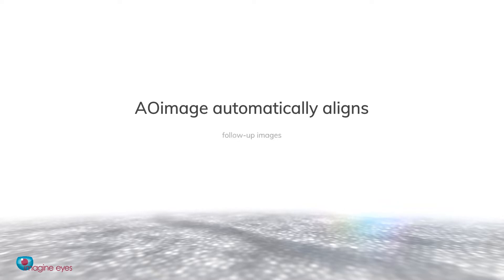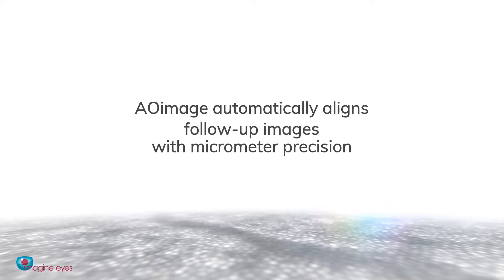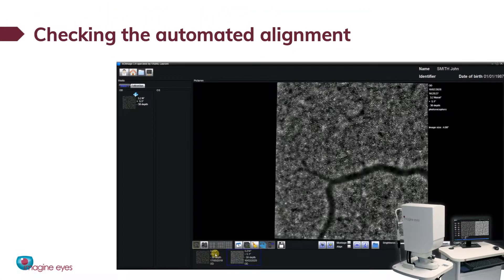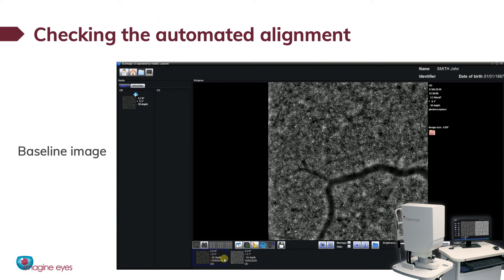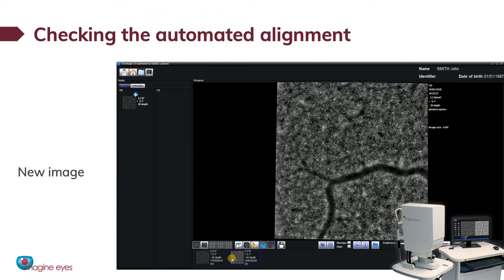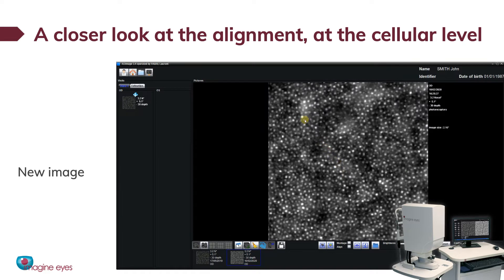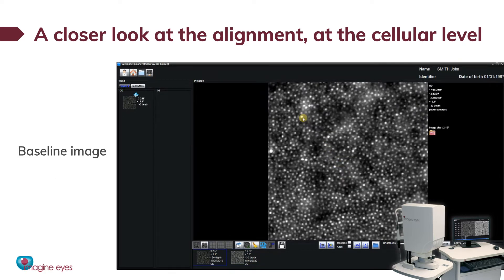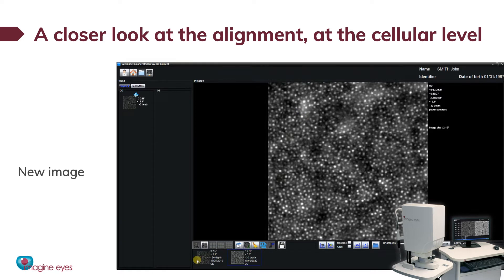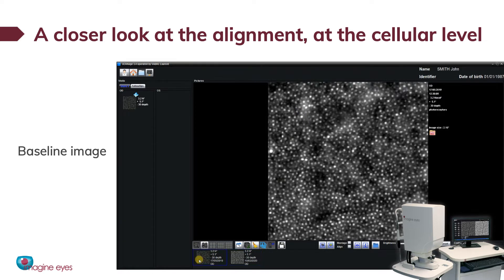AO Image automatically aligns follow-up images with micrometer precision. By switching between the baseline image and the new image, we can see that vessel shadows are perfectly aligned. Taking a closer look at the cellular level, we can switch between follow-up images and confirm that even cone cells are aligned.